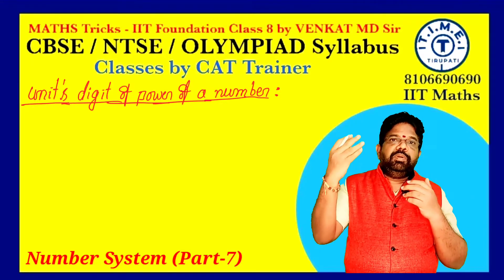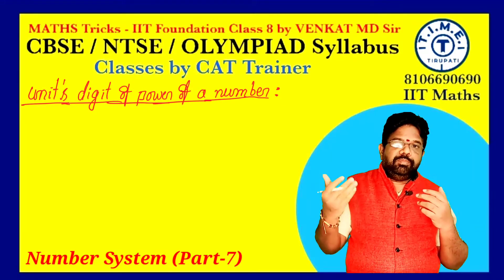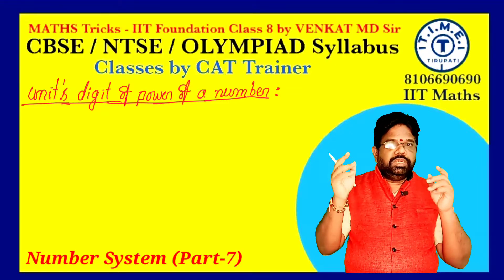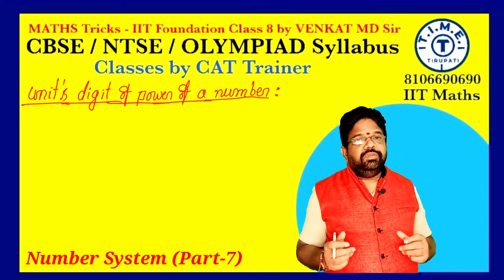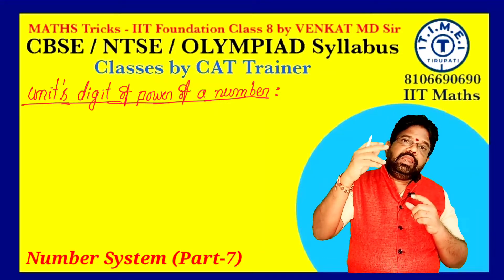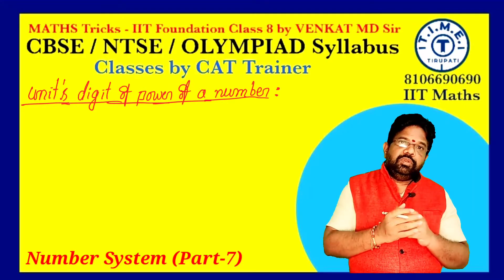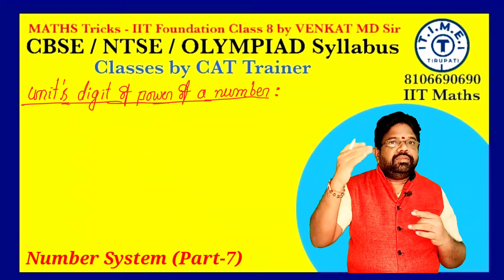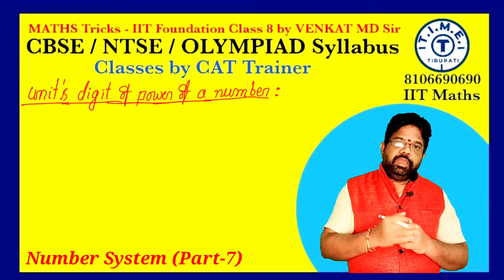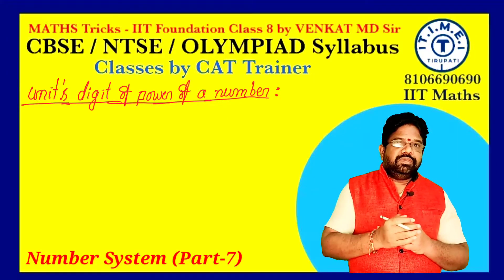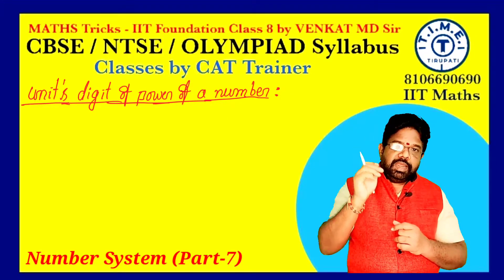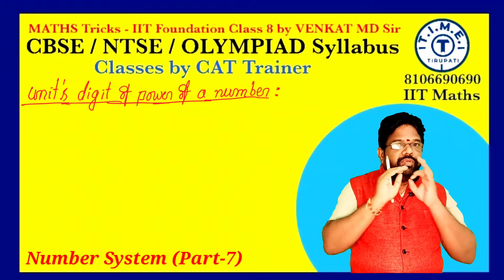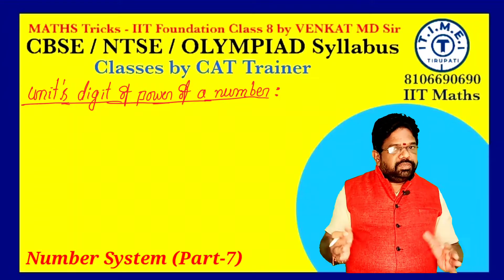For any number — 2 through 9 power — when any power is given, we find the unit's place value. The key rules: unit's place value of 2 power and 8 power is the same. Unit's place value of 3 power and 7 power is the same. For 4: odd power gives 4, even power gives 6. For 9: odd power gives 9, even power gives 1. For 5, the unit's place is always 5. For 6, the unit's place is always 6.